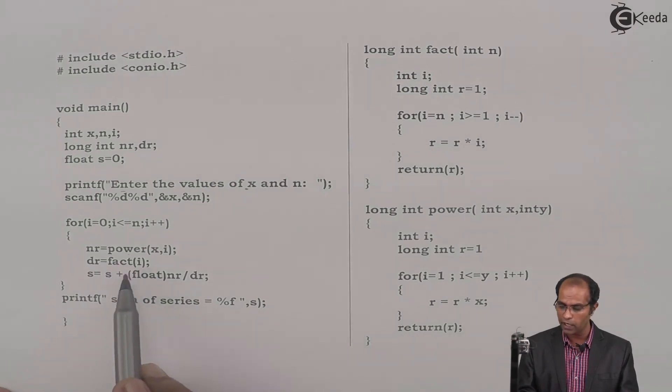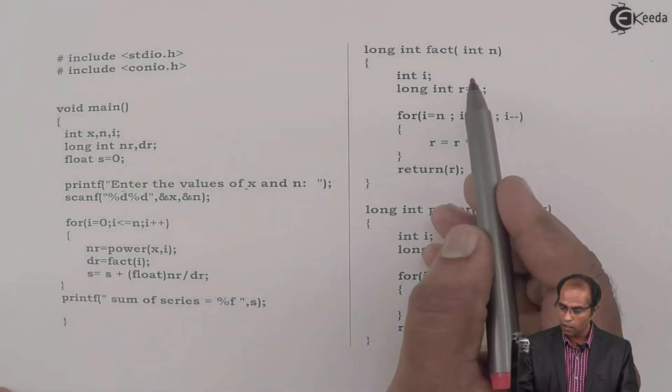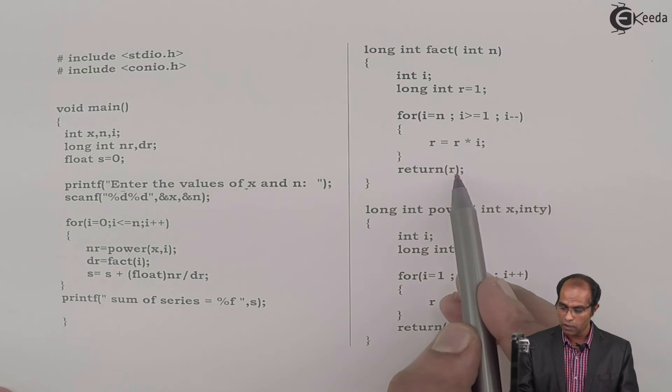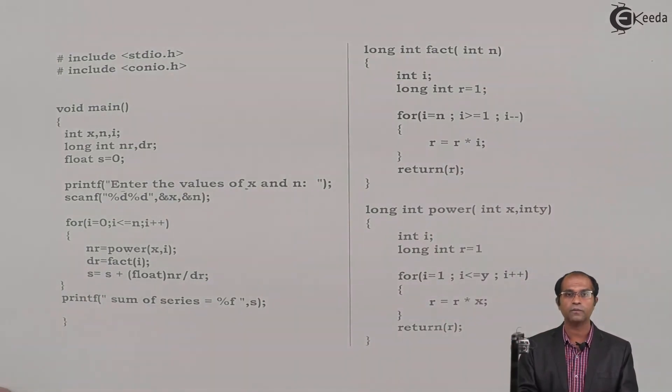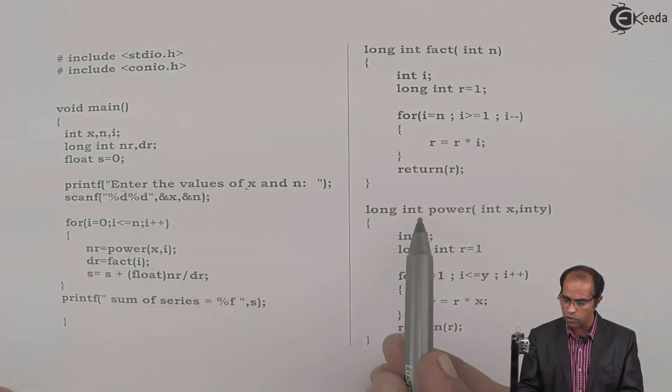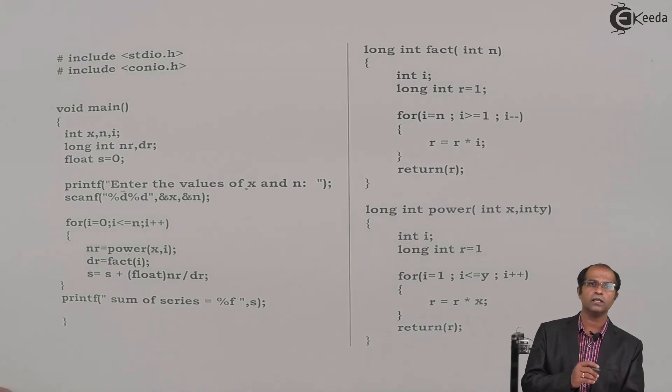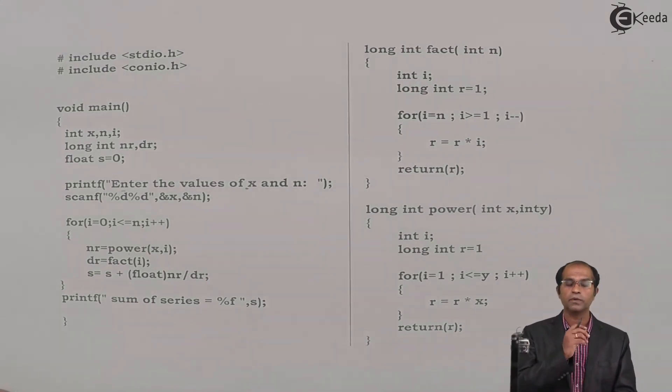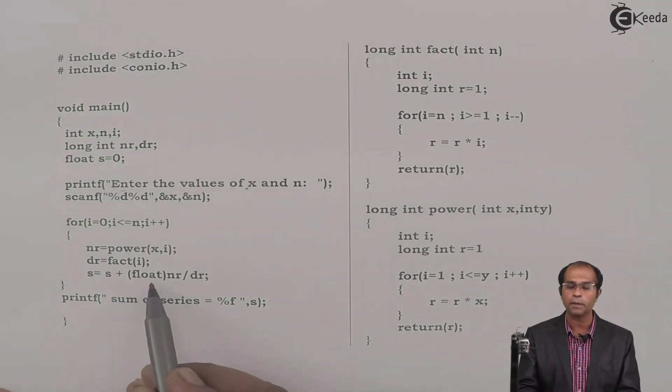After that, call a function dr = fact(i). Go to this particular function fact, and this will return r, which will store into dr. Then divide nr by dr. Since I've taken nr as a long integer value and dr also as a long integer value, a long integer by long integer tends to always return an integer value, but the sum seems to be a fraction value. To get the appropriate value, I'll do a type casting.